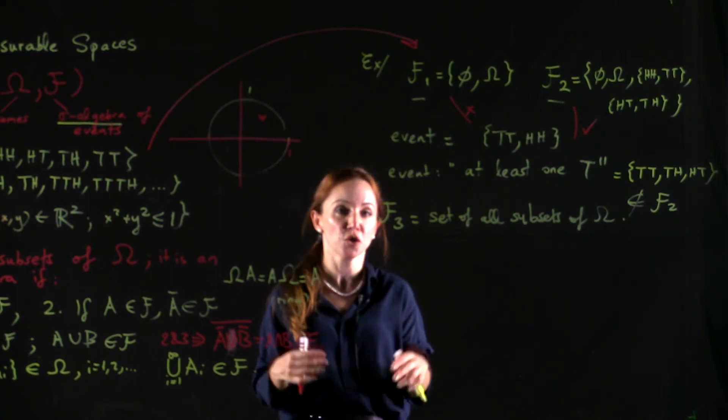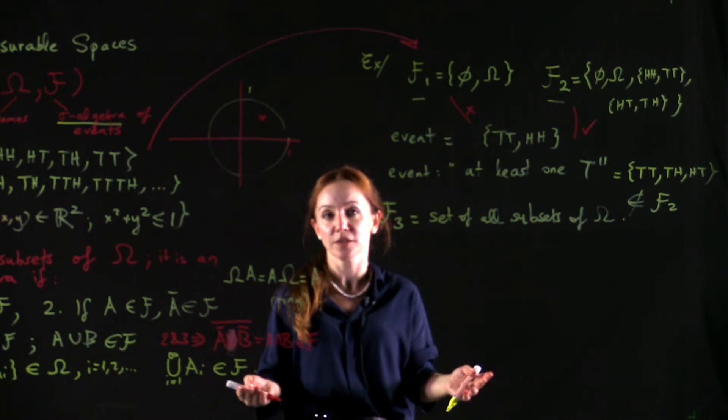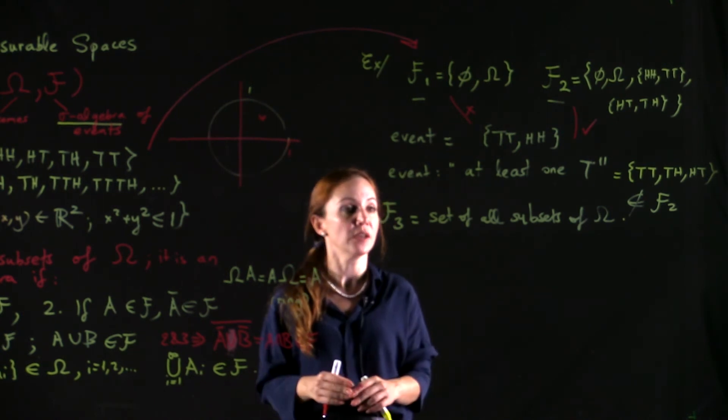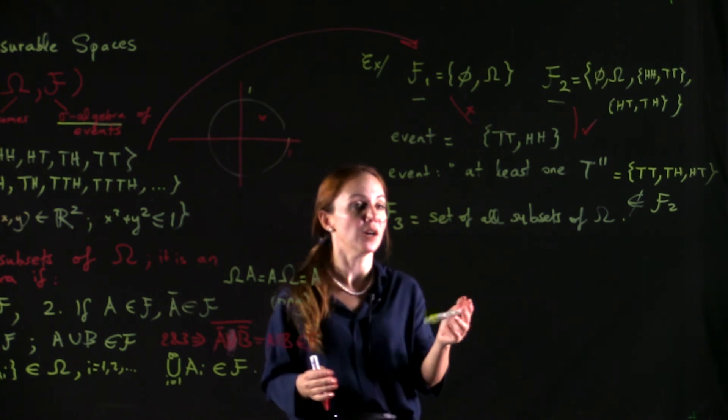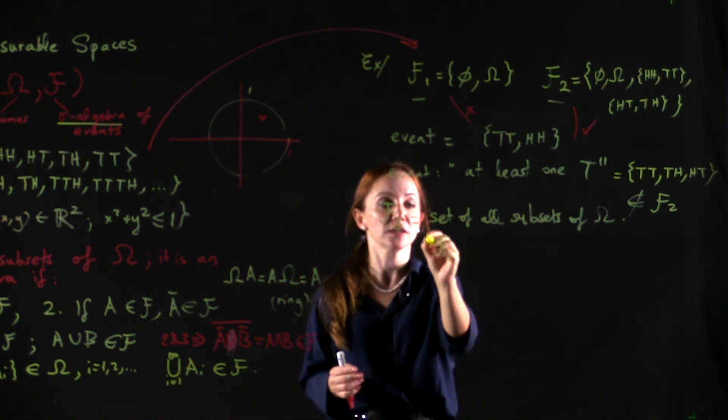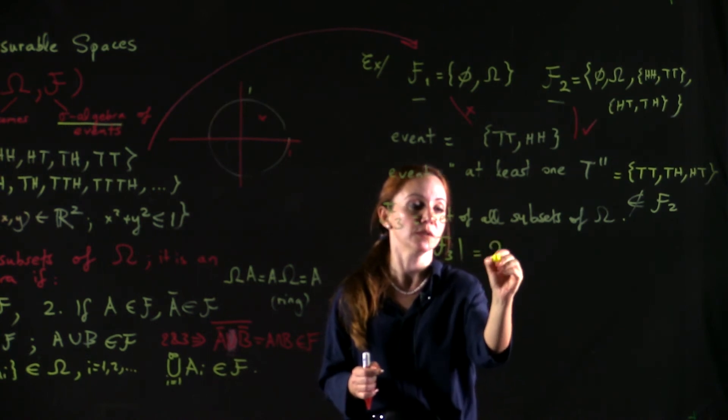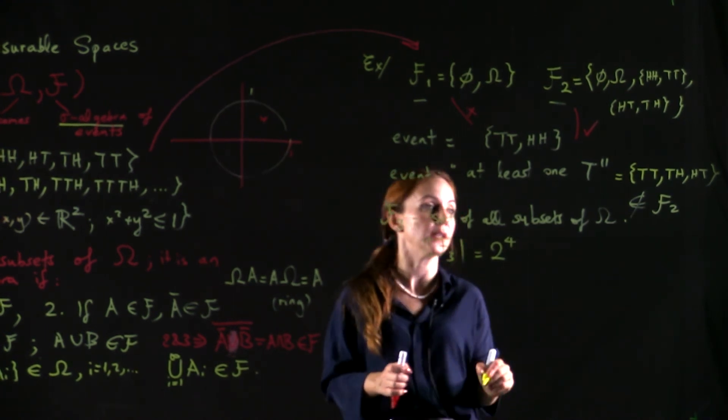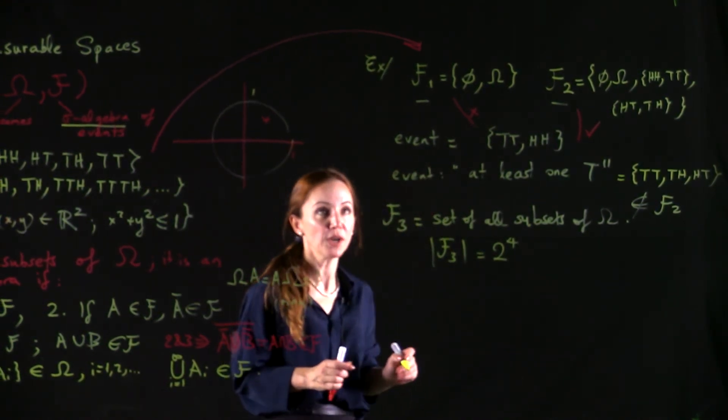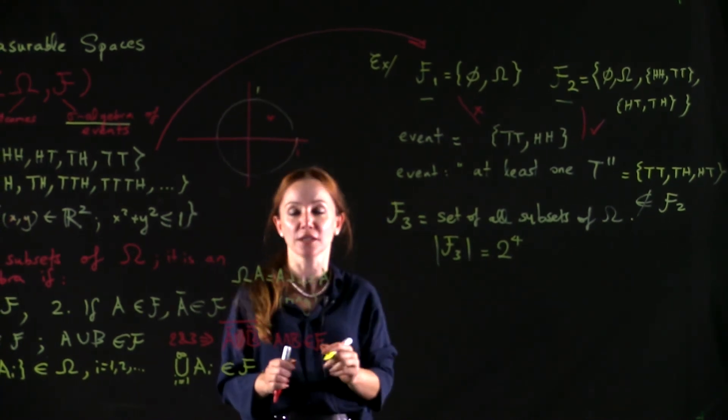We could define F3 as, for example, the set of all subsets of omega. And this is frequently the case when we deal with a finite omega like this. It's easiest to have the algebra F to contain all the possible events, which would be the set of all subsets, which has size 2 to the size of omega, in this case 16.